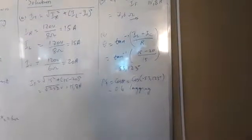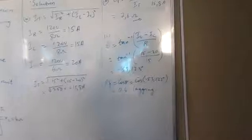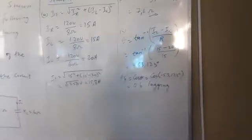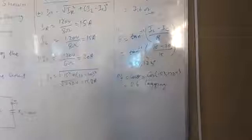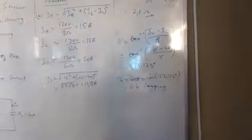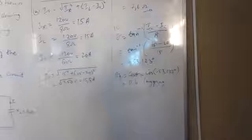The power factor cos θ of 0.6 is lagging. It's not really a good power factor - a good power factor is about 0.8, at least 0.9.